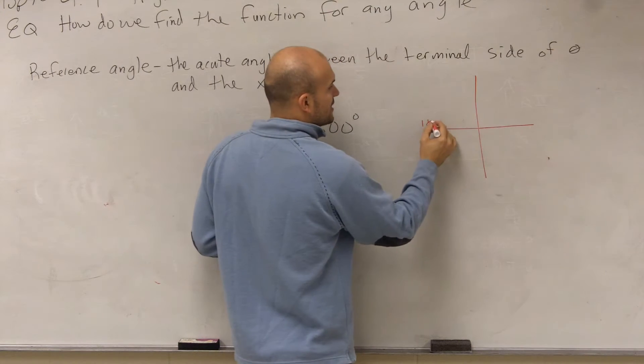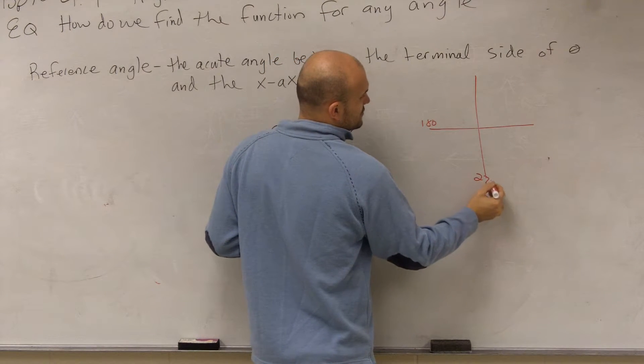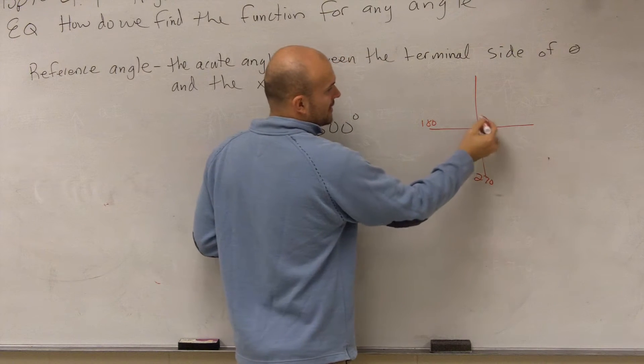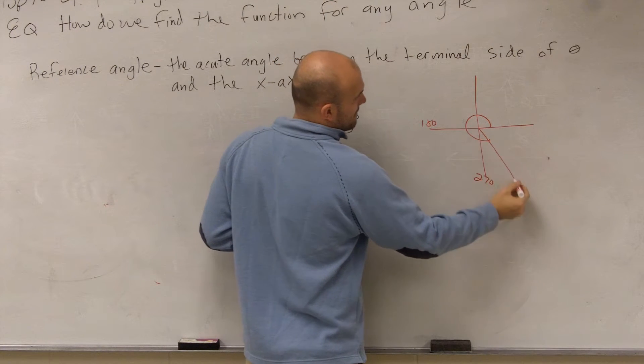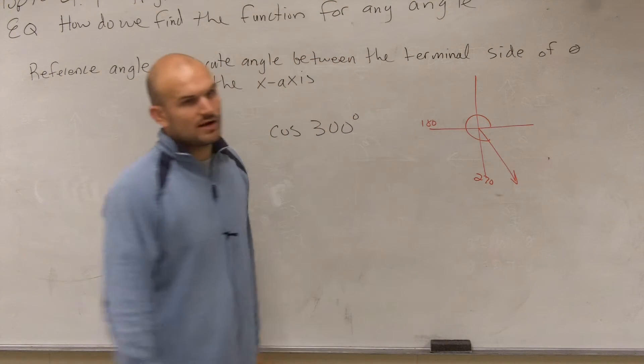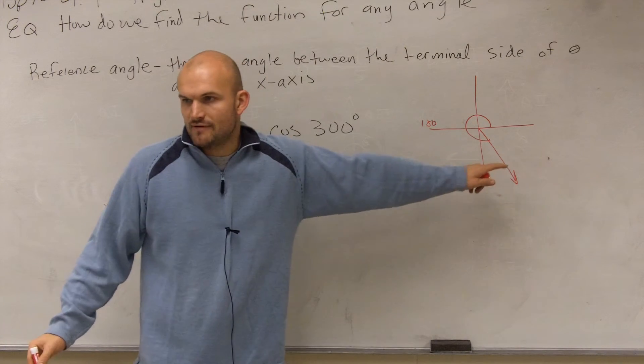Well, if here, over here is 180, here's 270, to get to 300, it's going to be that point right around there, right, just like an extra 30 degrees off of 270.